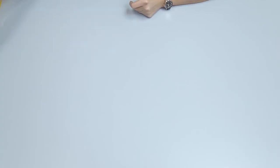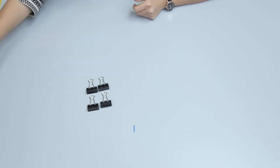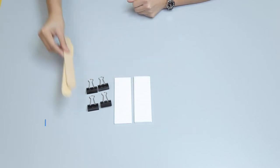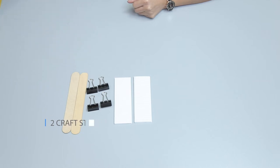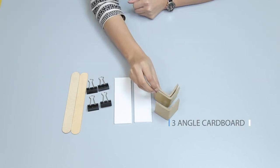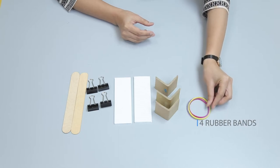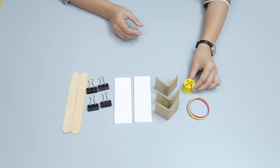For making a lever we need: four binder clips, two foam boards 15 by 5 centimeters, two craft sticks, three angled cardboard pieces, four rubber bands, one cotton reel, and one metal nut.